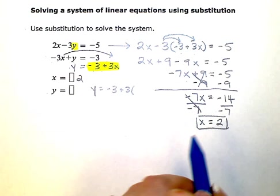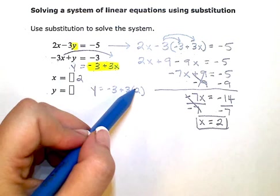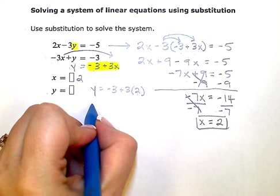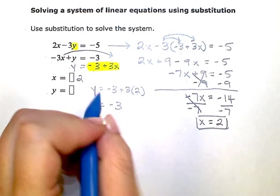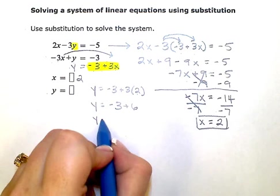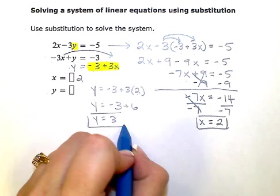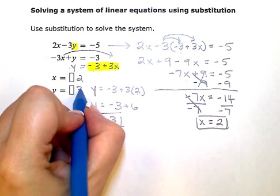Well, I know that x is 2. So instead of x, I'll just put in the value 2 and then simplify. So negative 3 plus 3 times 2 is 6, and negative 3 plus 6 is positive 3. So the y value of my solution is positive 3.